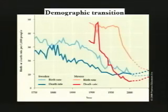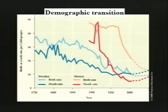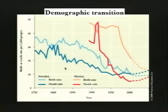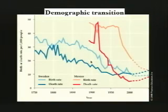One of the primary generators of these new individuals in human populations occurs during a demographic transition in the development of countries. We're referring to something primarily about technological development when we say a developed country as opposed to a developing country. When countries have been examined historically in terms of their population numbers, they're seen to go through a characteristic transition — the demographic transition — from a period of high birth rates and high death rates to a period of low birth rates and low death rates.